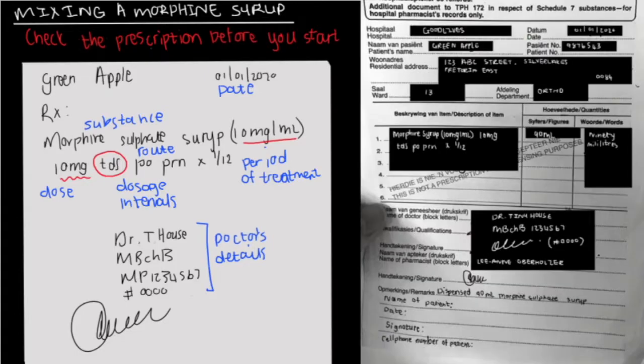All right, so back to step one. The date of the prescription must correlate with the date of the TPH. The TPH is just a document that accompanies any Schedule 6 prescription. And that document is signed by the person who collects it, either the patient or the nurse. And then it's taken back to the Schedule 6 cupboard where we file it to keep a record of every Schedule 6 medicine that went out of the pharmacy.